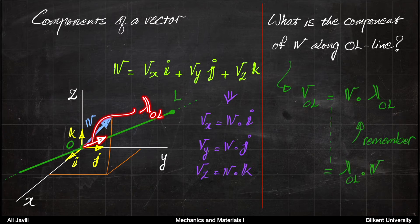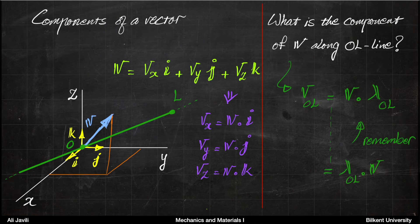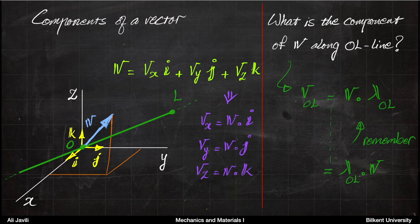Lambda_OL is a little vector that points in the same direction as OL and has unit length — so it's a unit vector. Also remember that the order doesn't matter for the dot product, so you may write it either way. As a warm-up conclusion: if you want to find a component of a vector along a given line or axis, it is simply a projection — and that is exactly what we did previously in that lecture. We project the moment vector onto the line to find its component.